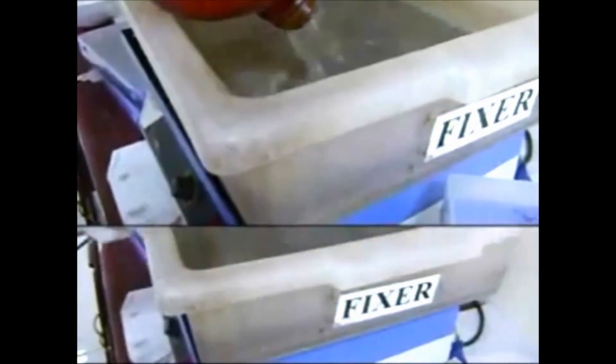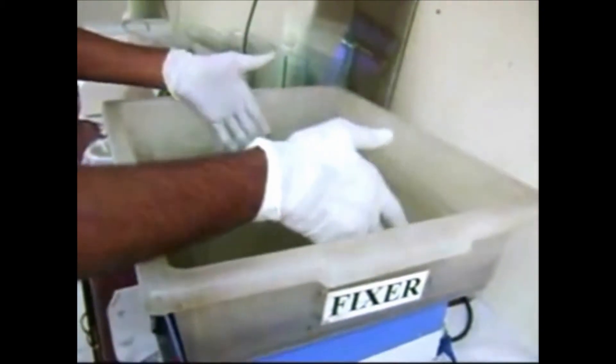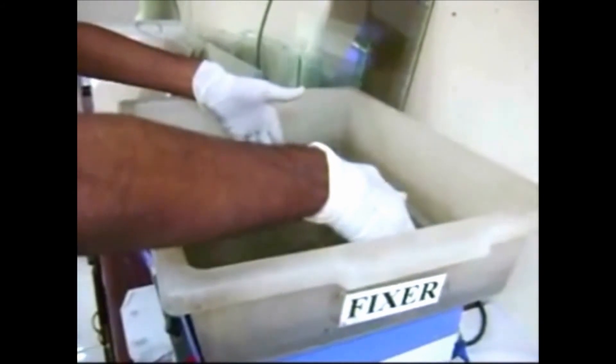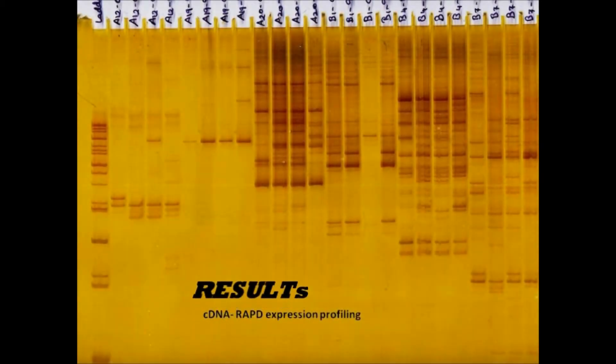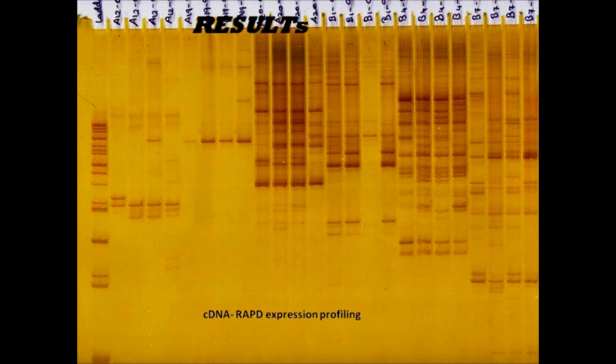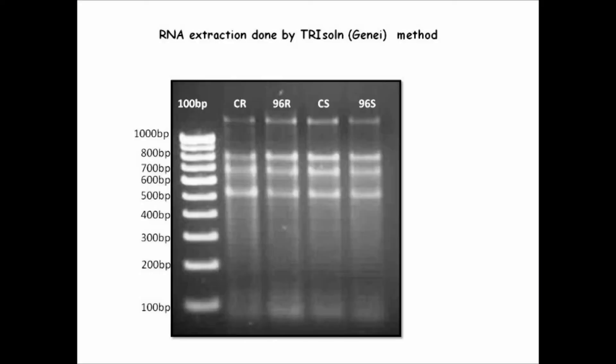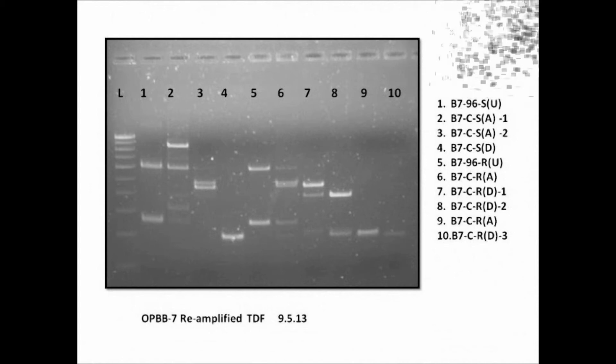The products of the cDNA RAPD PCR reaction were resolved on a 6% urea polyacrylamide gel at 3000V, 100W constantly for 2 hours. The gel was stained using silver nitrate. Differentially expressed bands were identified in the silver-stained PAGE gel. The comparison of amplification patterns between resistant and susceptible cDNA samples using RAPD primers indicates differential expression of 88 transcript-derived fragments, some of which were common to both samples.